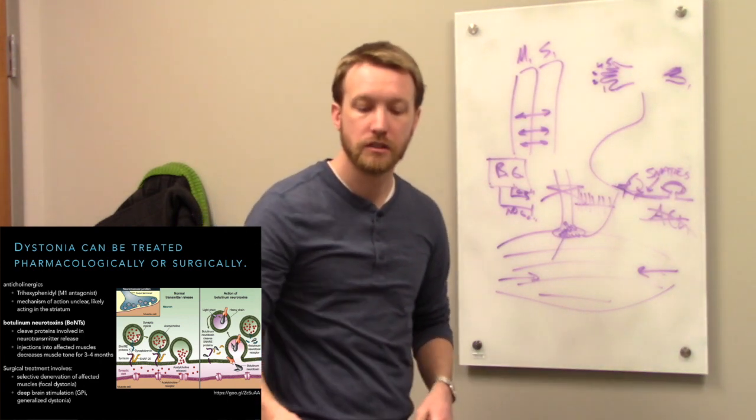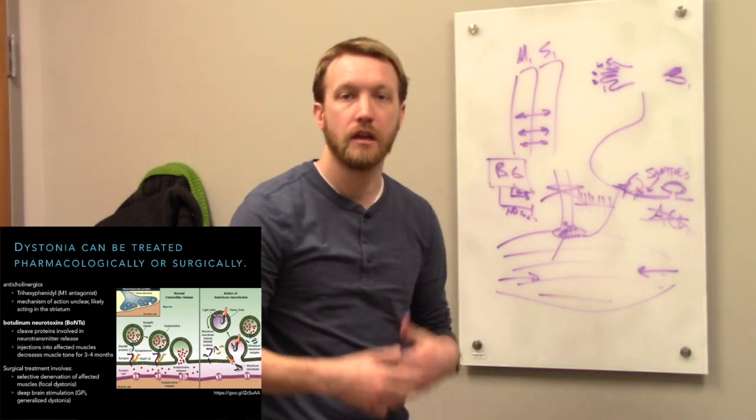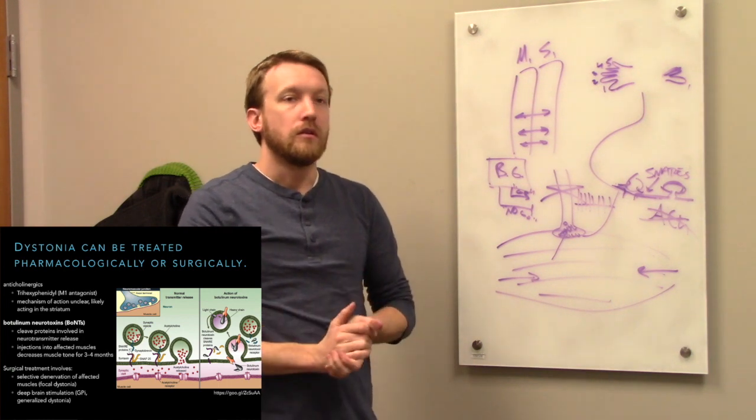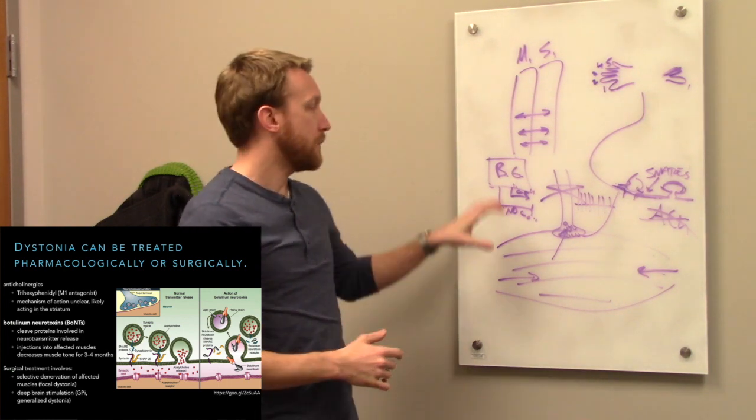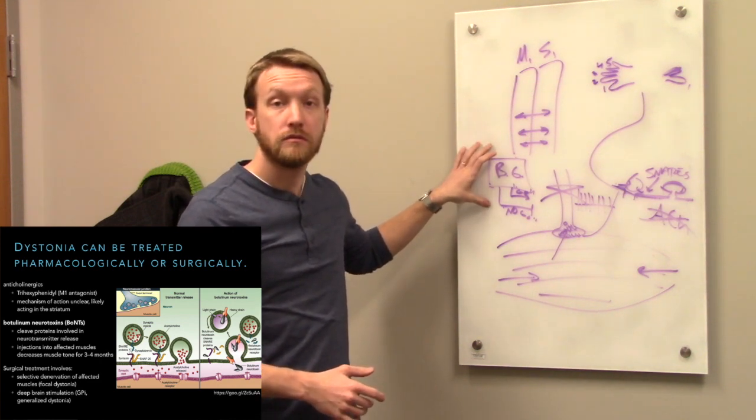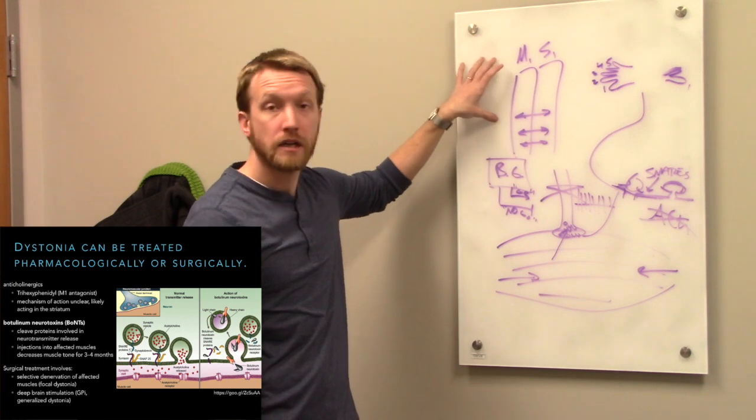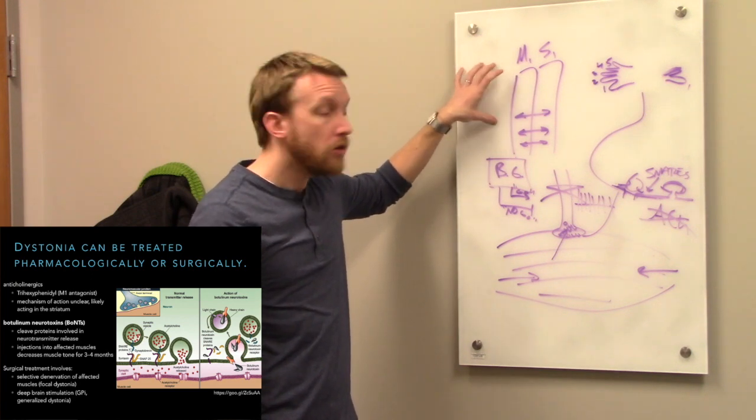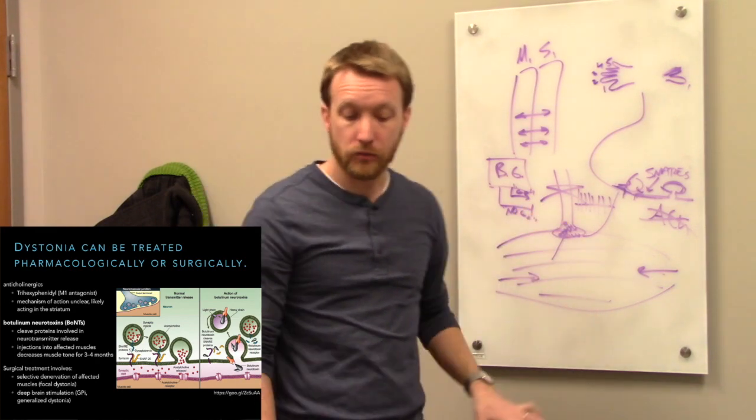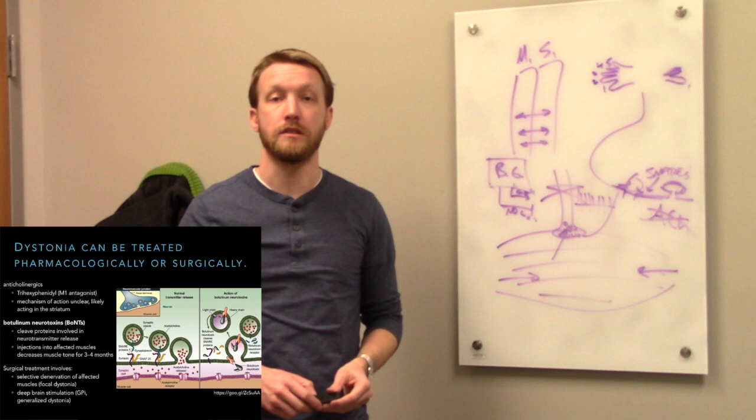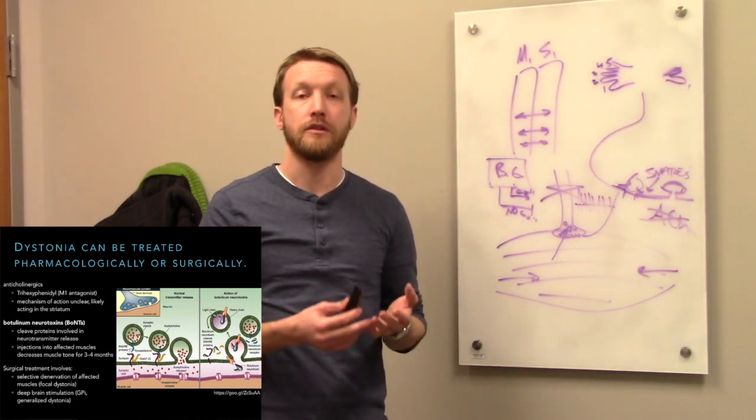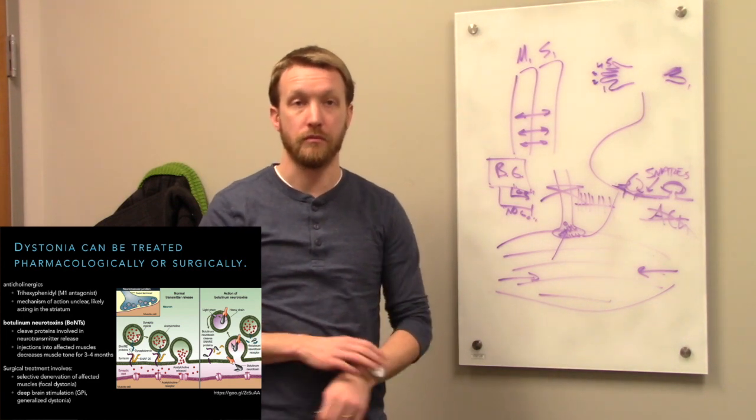So think of dystonia as essentially being trapped. Trapped in a motor program. This can be caused by abnormalities in the basal ganglia. We can treat it at that level. It could be caused by abnormalities in our cortex. And we can also treat it at the level of the motor neuron. Either way, no matter what's causing it, dystonia is a disease caused by inappropriate motor output. And the inability to stop that inappropriate motor output.